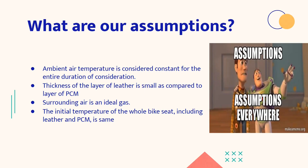And the last assumption is that the initial temperature of the whole bike seat including leather and PCM is same, so that we are not accounting the heat transfer through the bike body like the engine or stuff like that. And we are keeping the initial temperature as same because through that we can keep the temperature of the surface and the temperature of PCM as the same, which would further make our calculations easier. That would be described in the upcoming slides as well.